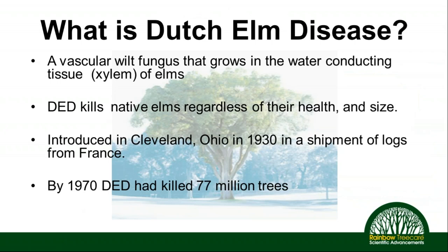Dutch elm disease is a fungus that grows in the water-conducting tissue — the xylem — of elm trees. It kills native elms regardless of their health, size, or any cultural practices being used. It's really an equal opportunity killer, especially for American elms and red elm. This disease was first introduced in Cleveland, Ohio in 1930, arriving on a shipment of logs from France, and by 1970 had killed 77 million trees in the United States, ravaging our urban forests.